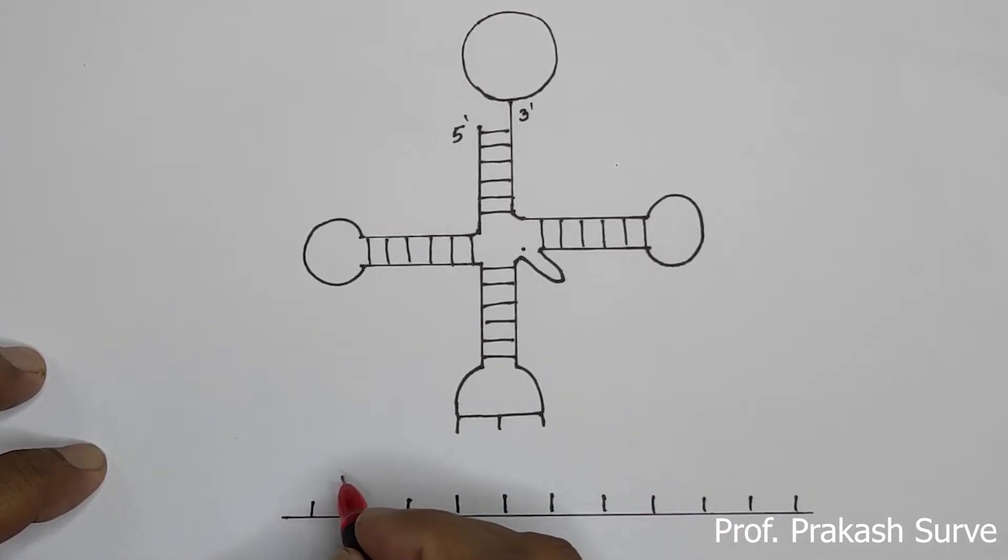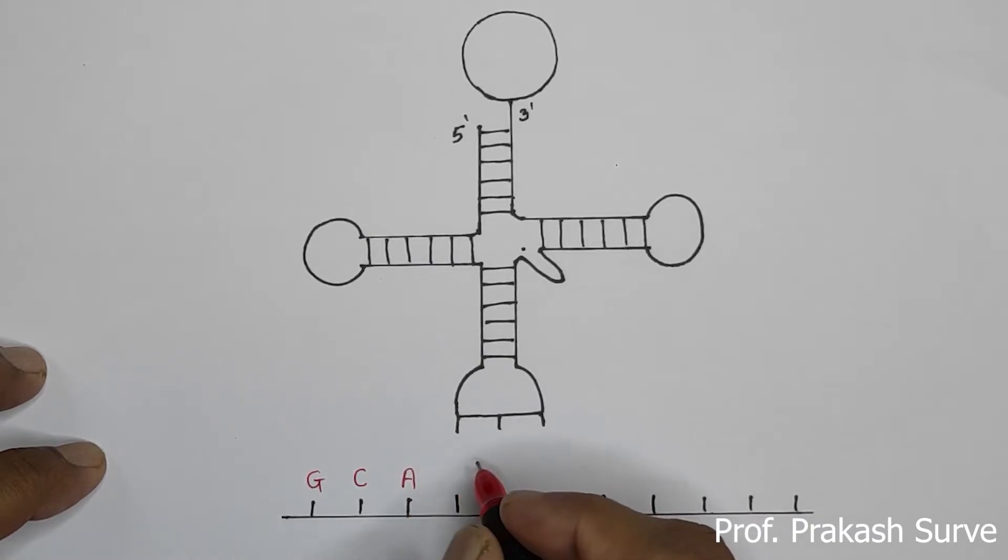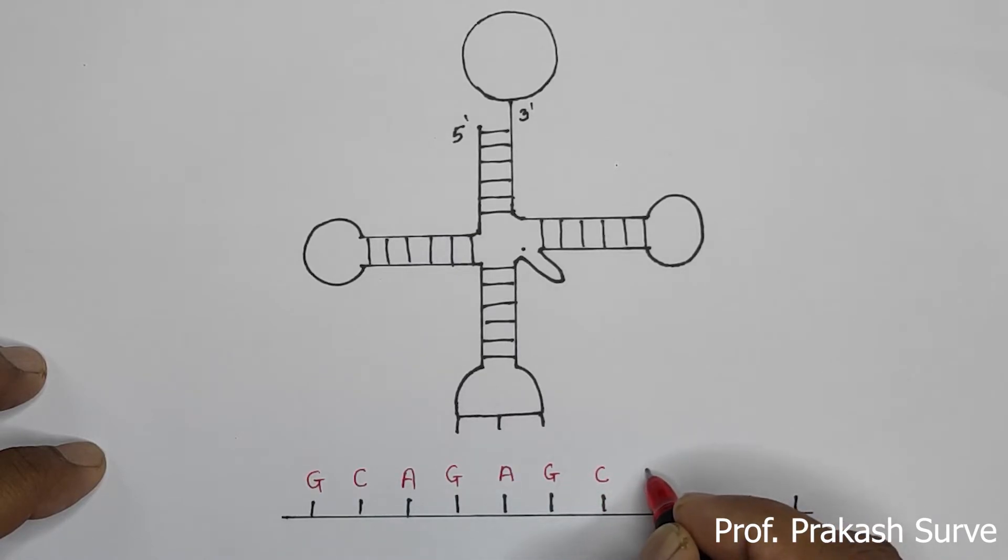So here we will start with the G, C, A, then G, then U, then G, then U, then G. Then G, then C. So these are the nitrogen bases.